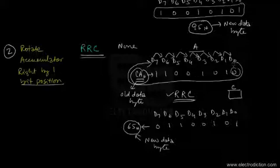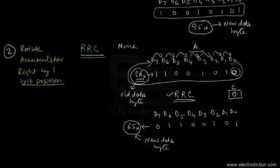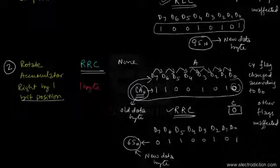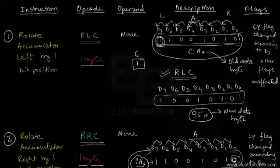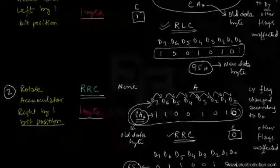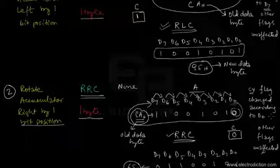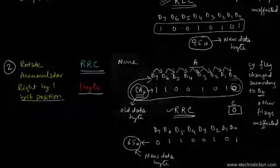The bit at the D0 position is 0, and it's being transferred to the D7 position. So the carry flag records the value of the bit transferred from D0 to D7 — here the carry flag is set to logic 0. Both RLC and RRC are single byte instructions. Except for the carry flag — which is changed according to bit D7 for RLC, and according to bit D0 for RRC — the rest of the flags are not affected.